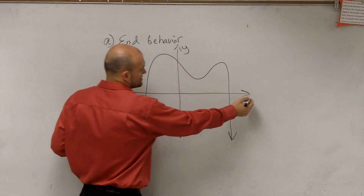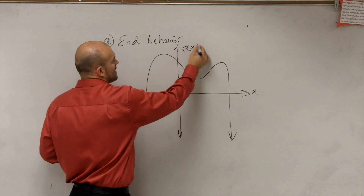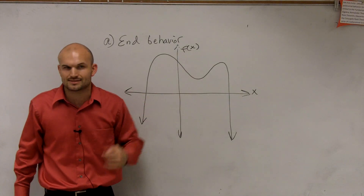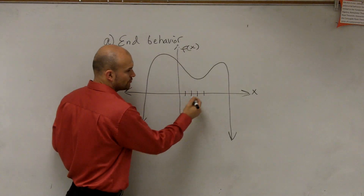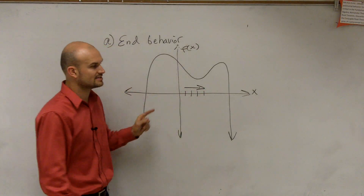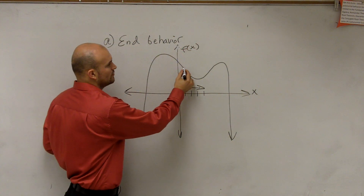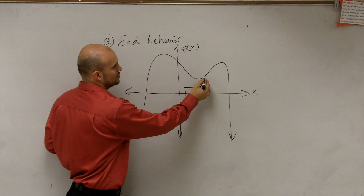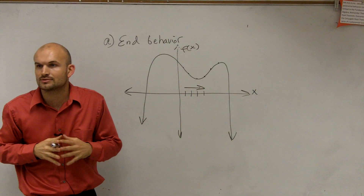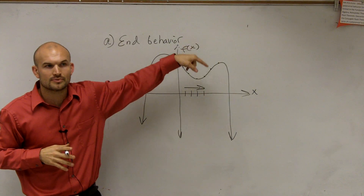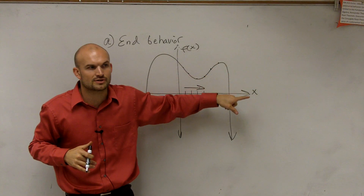What we have is a y-axis and an x-axis. We're going to call this our f(x)-axis — the same as the y-axis, it's our output axis. As my x-values go to the right, moving along the graph to the right, where do the y-coordinates go? Where do they approach — up, down, right, left?